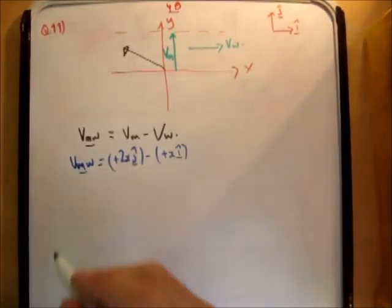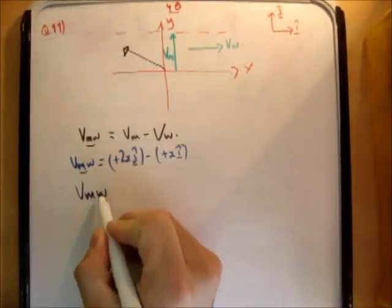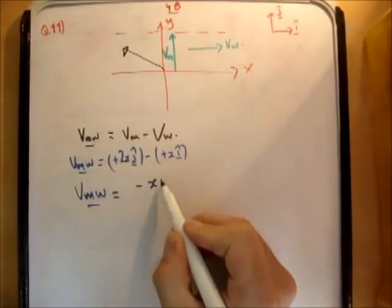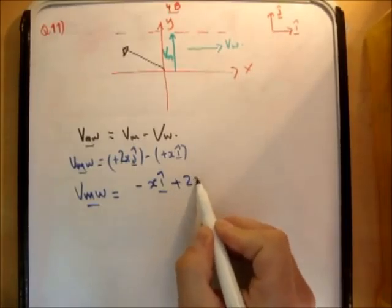And that's going to be the velocity of the man relative to the water. Alright? And that means the velocity of the man relative to the water, which is where it actually heads, is going to be negative x i-hat plus 2x j-hat.